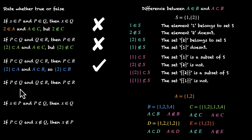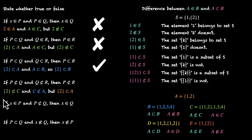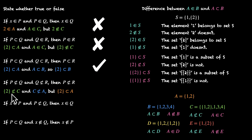Statement 4: if P is not a subset of Q and Q is not a subset of R, then P is not a subset of R. That's not how negative sentences work — this seems false. For example: the set containing 2 is not a subset of C, and C is not a subset of A, but the set containing 2 is a subset of A. So the statement is wrong.